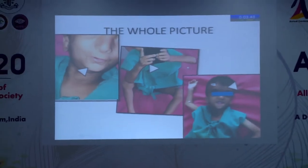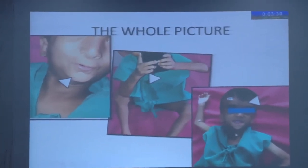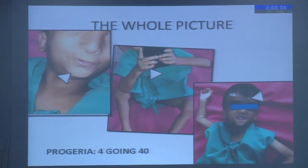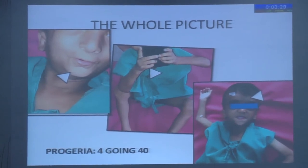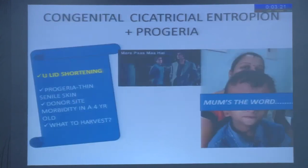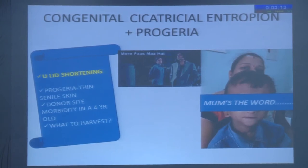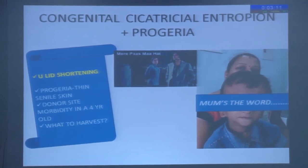A four-year-old child is generally supposed to be chubby, but this child didn't look like that. He was actually a case of progeria — a premature aging condition. The child had multiple issues: concerns with GA fitness and some renal compromise. Overall his skin was senile and fragile — not an ideal candidate for a skin graft.